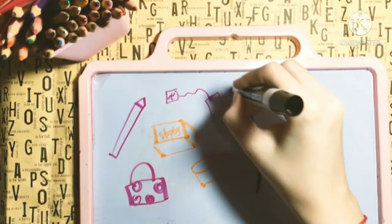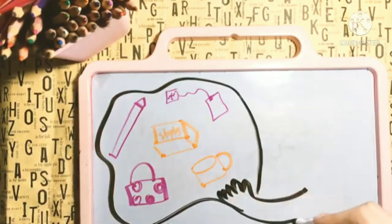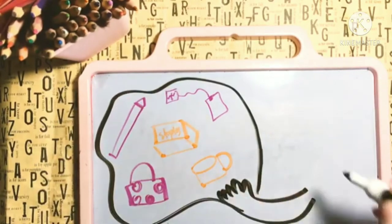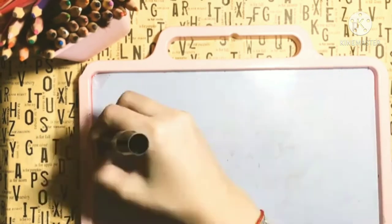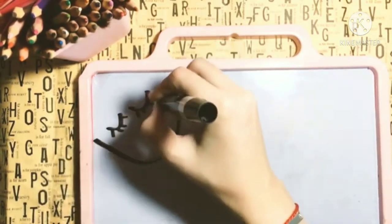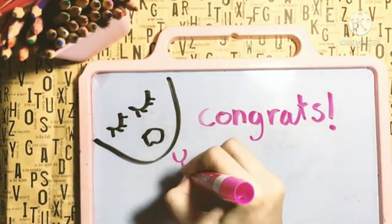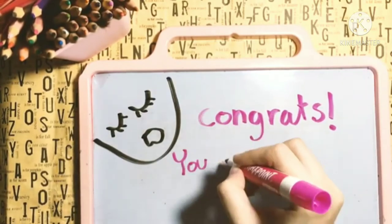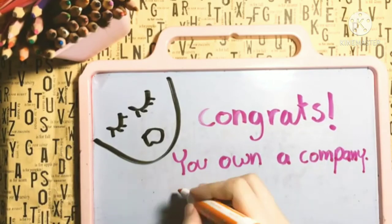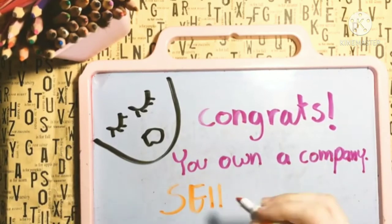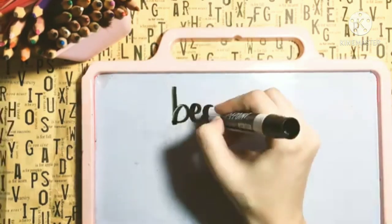Put them in a bag and ask each student to take an item without looking. And don't explain anything to them — let them get curious. Tell the students that they're the owner of a big company that produces this particular product and they need to advertise it. What would they say? How would they describe it? What would they do to convince the consumers to buy it?